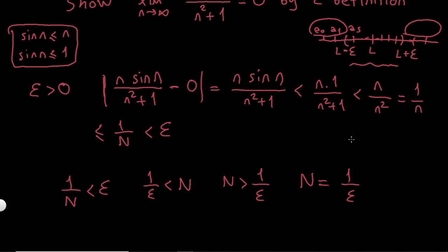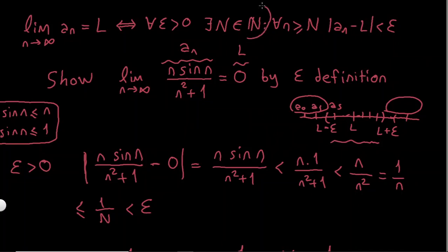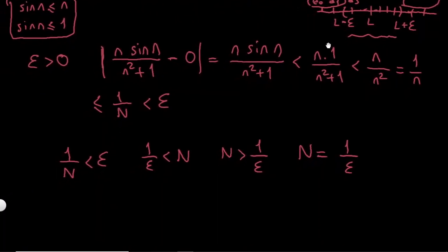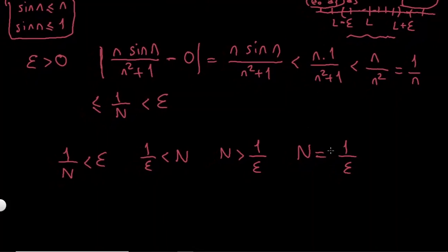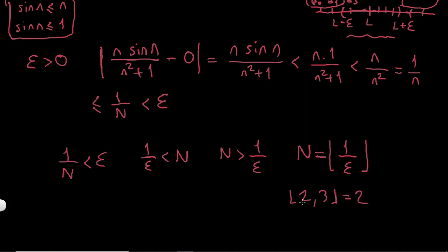There is one more detail: N must be a positive integer, and 1/epsilon may not be an integer. So I use the floor function. The floor function rounds a number down to the largest integer not exceeding it — for example, floor(2.3) = 2. So I can choose N = floor(1/epsilon) + 1, which ensures N is an integer greater than 1/epsilon.